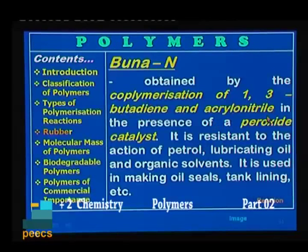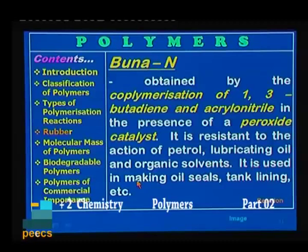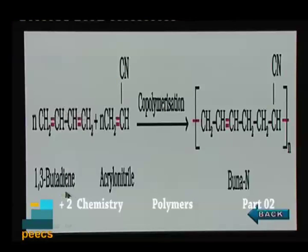Next is Buna-N, obtained by the copolymerization of 1,3-butadiene and acrylonitrile in the presence of a peroxide catalyst. It is resistant to the action of petrol, lubricating oil, and organic solvents. Hence it is used in making oil seals and tank linings. 1,3-butadiene reacts with acrylonitrile (vinyl cyanide) and undergoes copolymerization to form Buna-N. Different oil seals and gaskets are made of Buna-N.